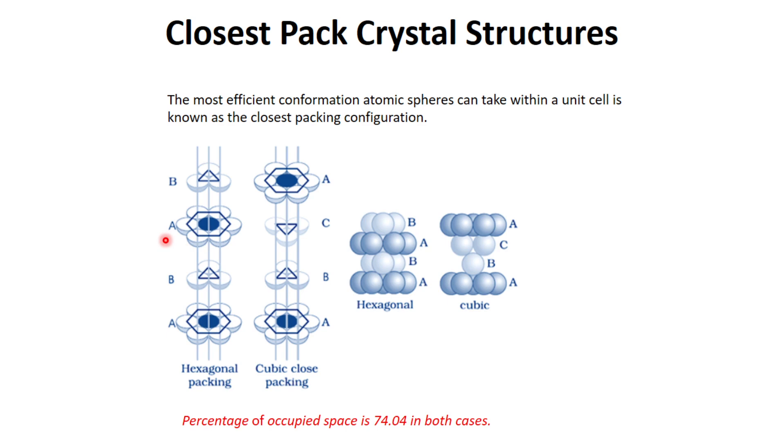We can join the center of these spheres and we have this kind of hexagonal structure. After layer B, the plane will repeat and we will have again the plane of atoms A, so the combination is ABAB.